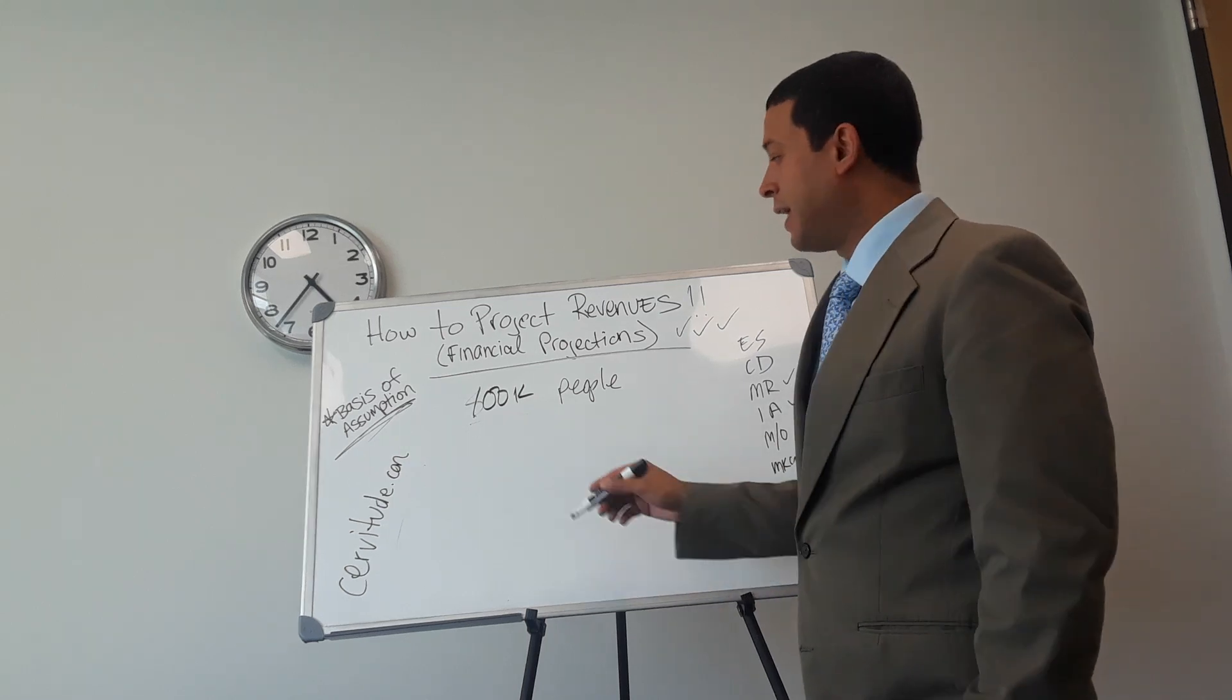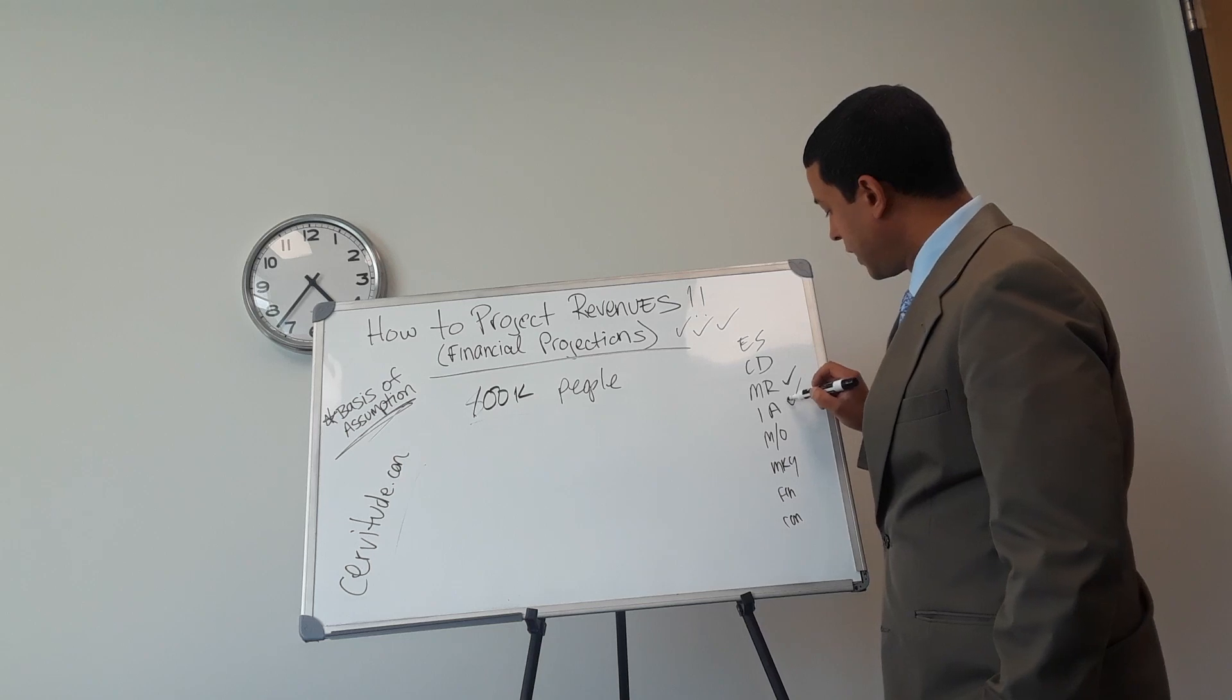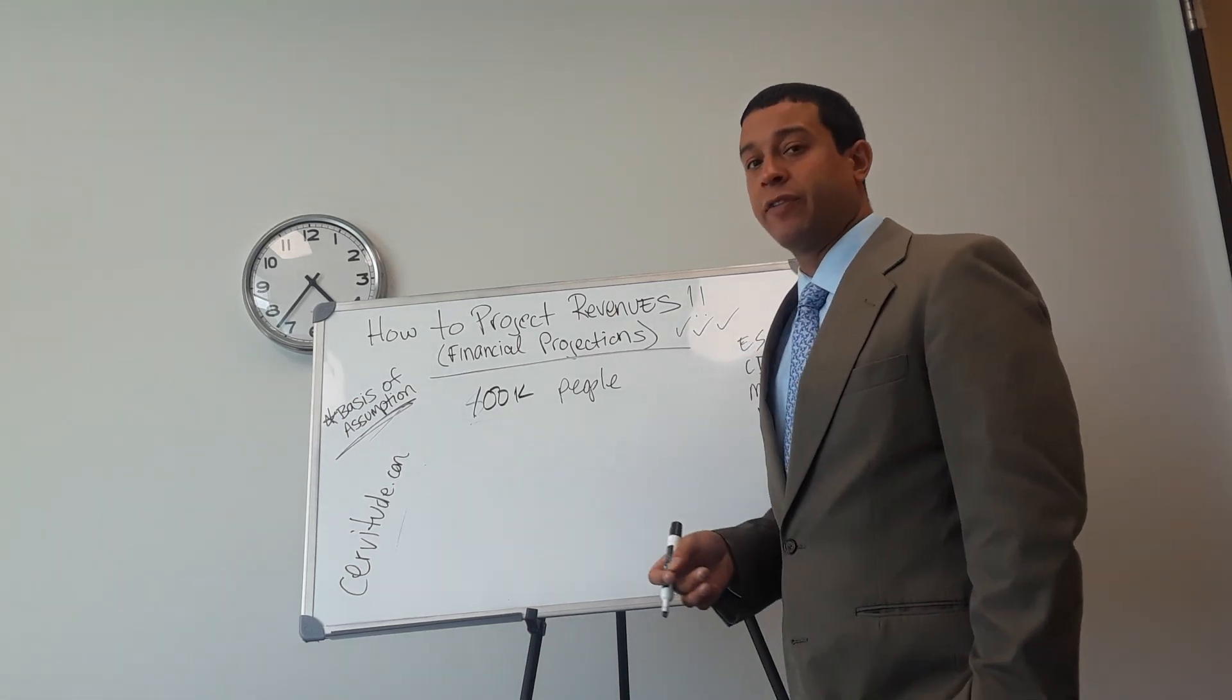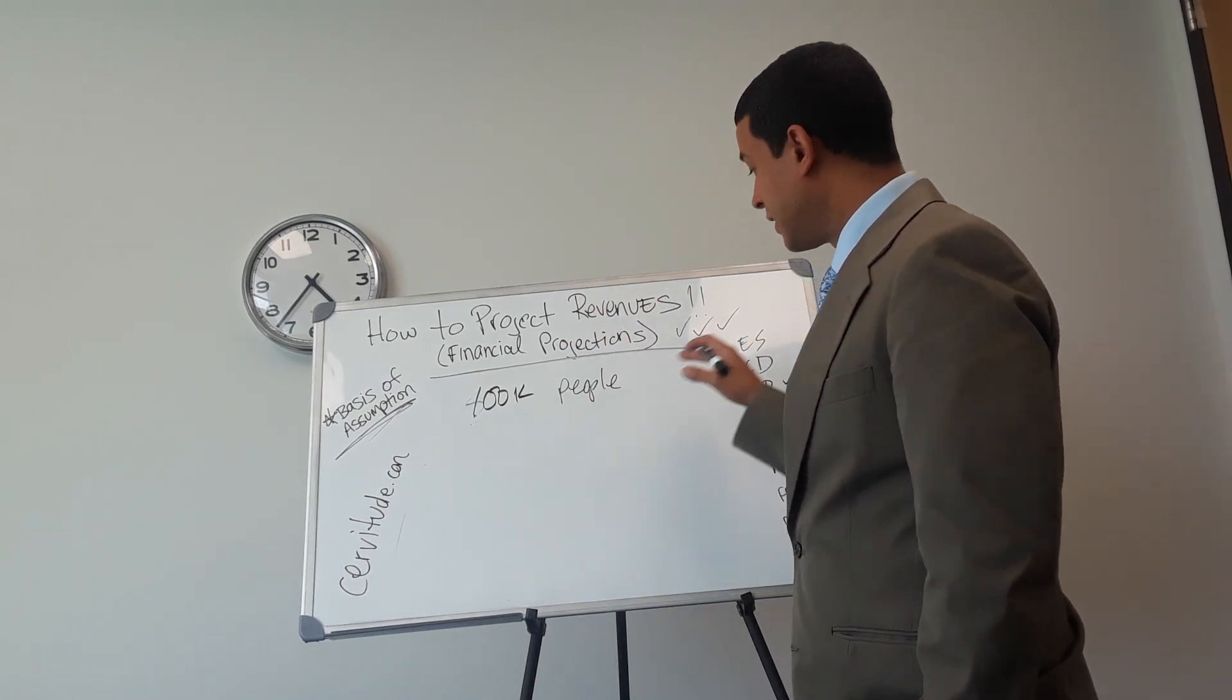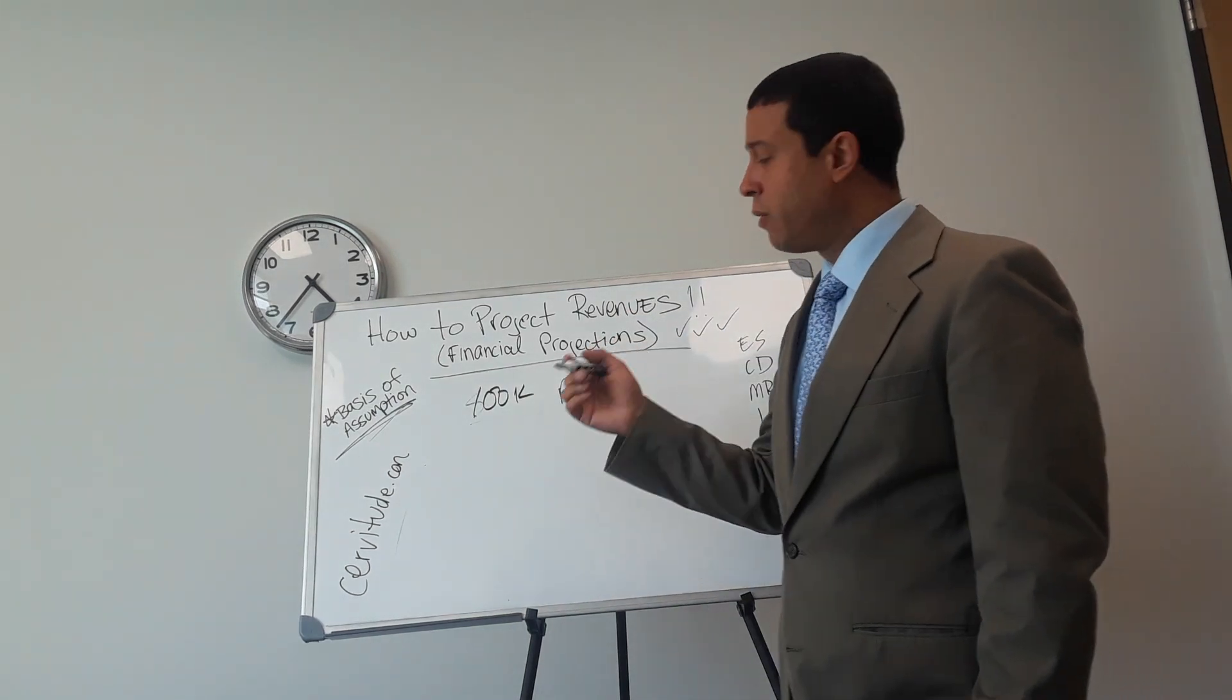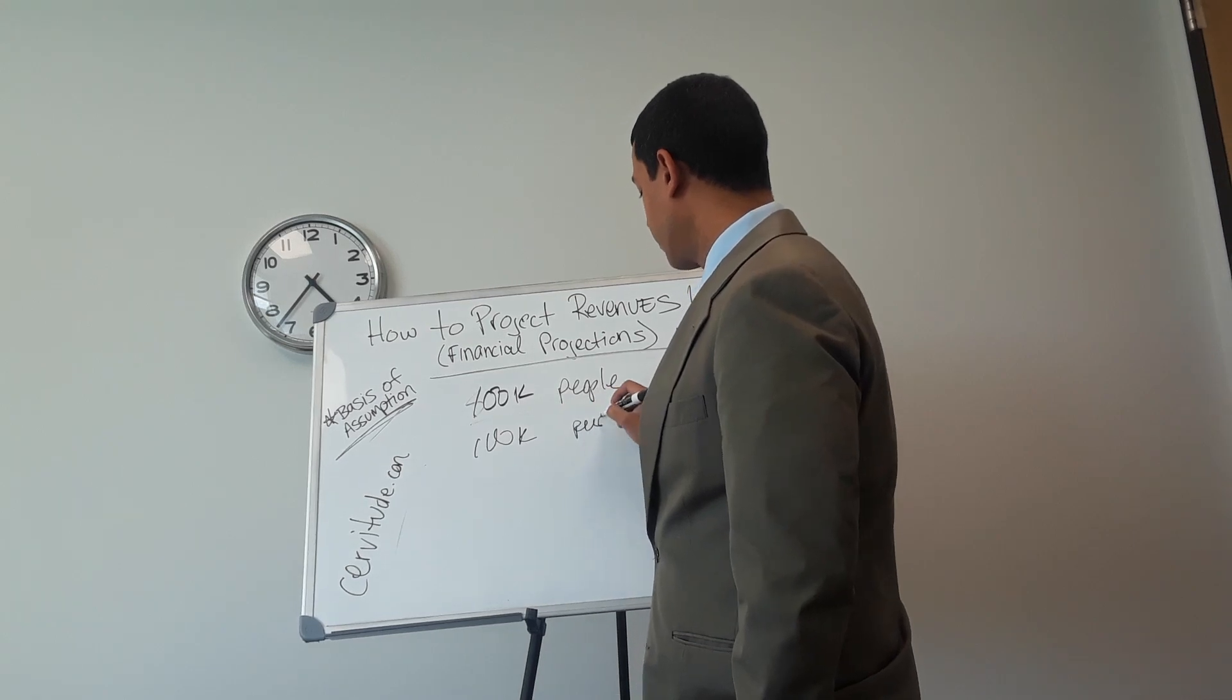Let's say we factor in that a fourth of them - now remember, this is where good market research and industry analysis comes in. Buy the reports, take the surveys, go out and ask questions to potential business owners or business owners already established to get this demographic. Out of those 800,000 people, we say we think 100,000 of them eat out.